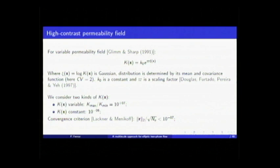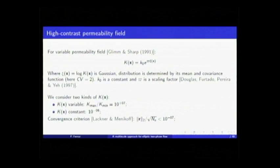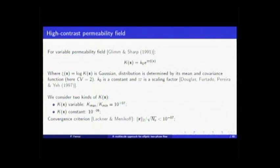For the variable permeability field, we use a model from Glyn and Sharp, where the permeability field is the log of a Gaussian determined by its mean and covariance. In our experiments, we use a covariance of two. We consider two kinds: variable and constant. The constant is 10 to the minus six for the permeability field, and the variable permeability field has a ratio from maximum to minimum permeability of 10 to the plus seven. The convergence criterion we use for the conjugate gradient method is a normalization of the residual by NE — the total number of elements — and we set the tolerance to 10 to the minus seven.